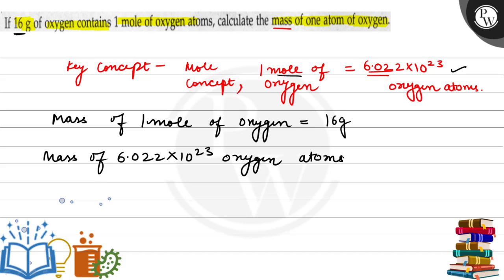is 16 grams. So we have to calculate the mass of 1 oxygen atom.